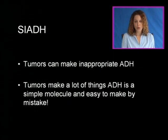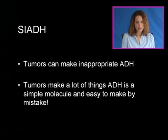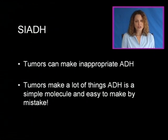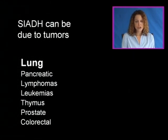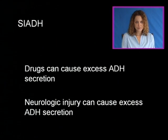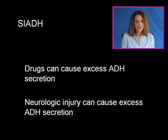Tumors can make inappropriate antidiuretic hormone, so SIADH can be caused by a tumor. ADH is a simple molecule and easy to make by mistake. SIADH can be due to tumors of the lung and pancreas, and can be caused by lymphomas, leukemias, tumors of the thymus gland, prostate, and colorectal cancer. Drugs can also cause excess ADH secretion, as can neurologic injury.